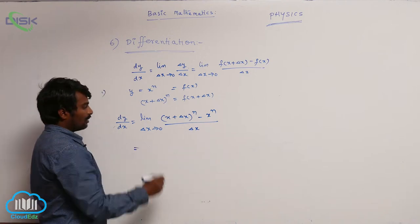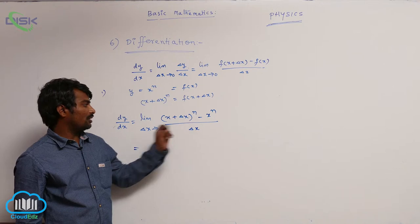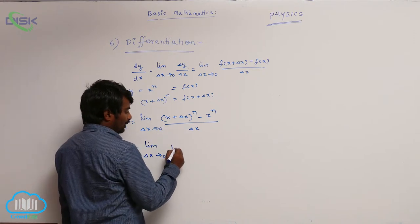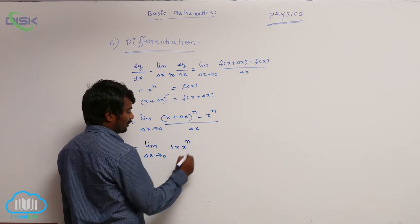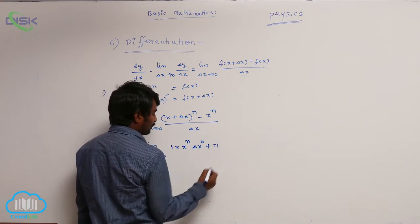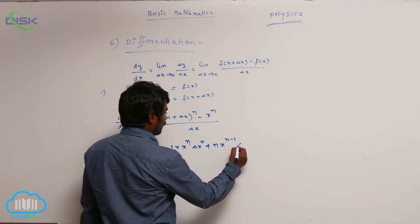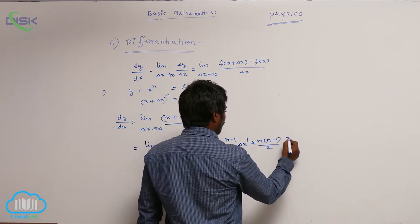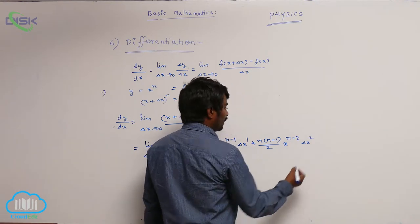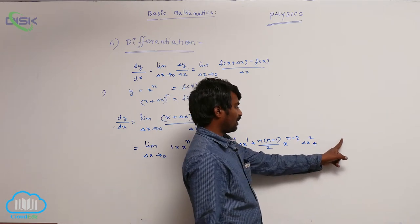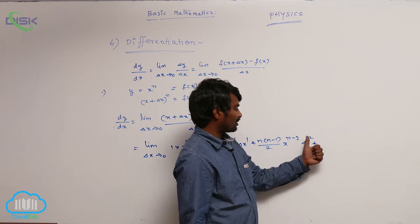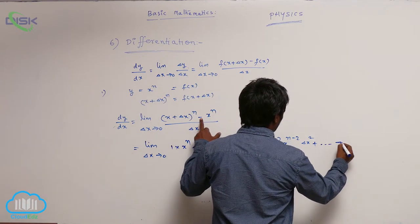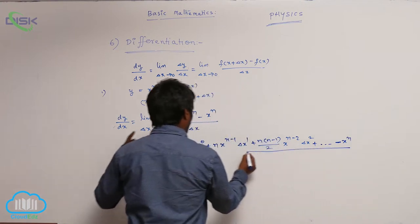Let us expand this term using the binomial theorem. The limit as delta x tends to 0 gives us: 1 times x power n times delta x power 0, plus n times x power n minus 1 times delta x power 1, plus n times n minus 1 by 2 times x power n minus 2 times delta x squared, plus n times n minus 1 times n minus 2 by 6 times x power n minus 3 times delta x cubed, and so on, minus x power n, all divided by delta x.